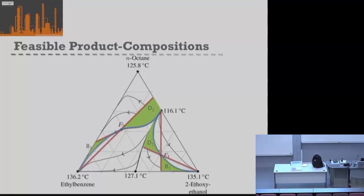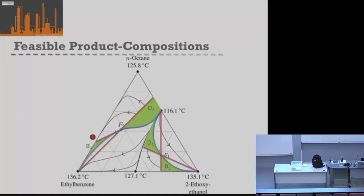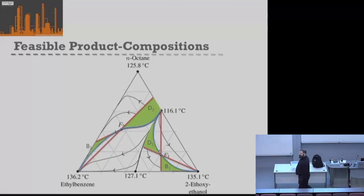It doesn't matter if our residue curves are simple or more complicated in shape, as for feed F2 — we still follow exactly the same process. Identify the residue curve through the feed, find two extreme products, draw the extreme bottom product line through feed, draw the extreme distillate line through feed, stopping where limited by the distillation boundary or graph edge. The feasible area for the distillate is identified as the region between those limits and the residue curve. This shows, for example, that from F2 it's possible to get pure ethylbenzene, but not pure n-octane — we'd have to settle for something around the azeotrope composition instead.